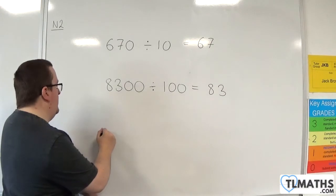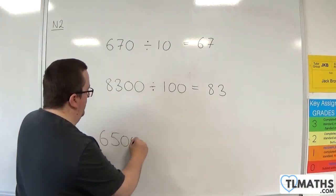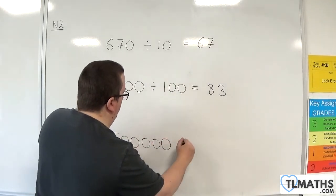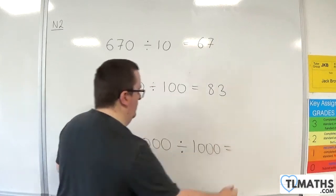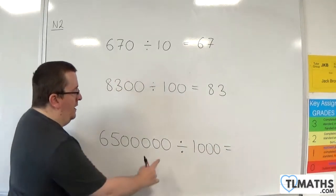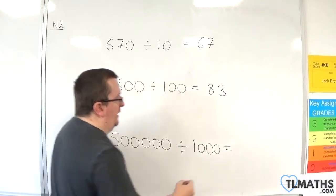And if I have 6,500,000 and I want to divide that by 1,000, essentially I'm going to remove three zeros and I'm going to be left with 6,500.